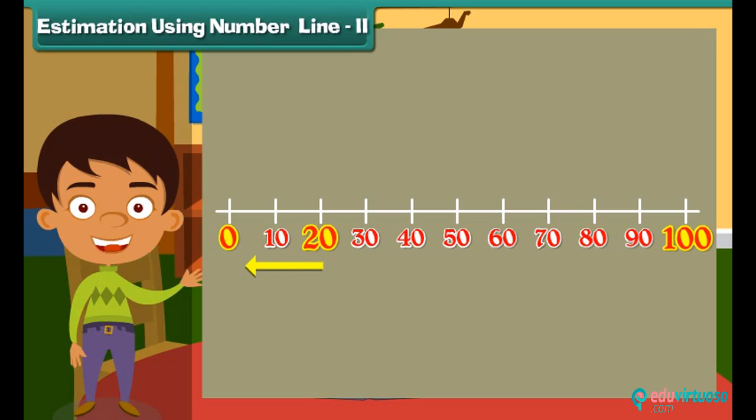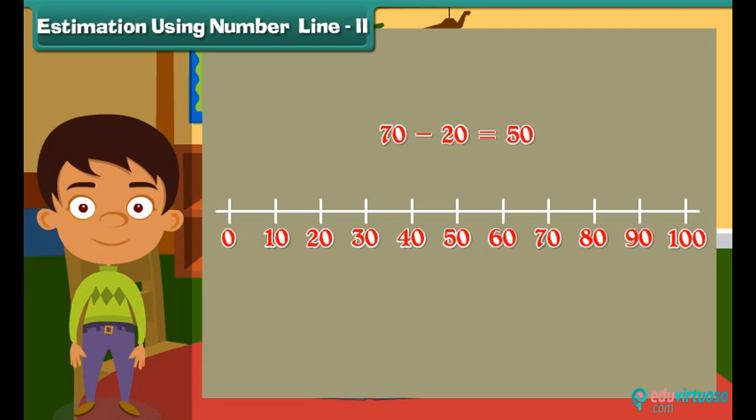What about number 70? Yes. Number 70 will be near 100. Subtracting 20 from 70 we get 50. And the position of 50 will be the centre of the line.